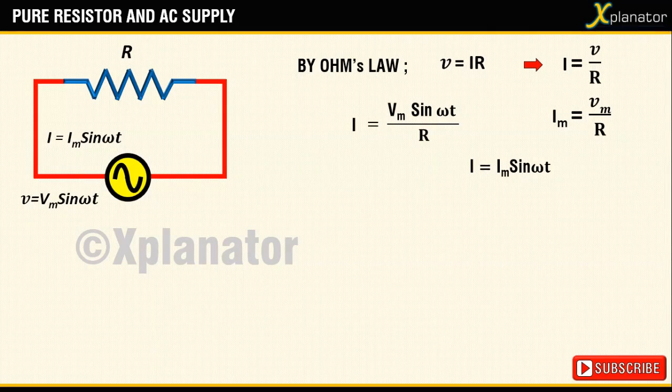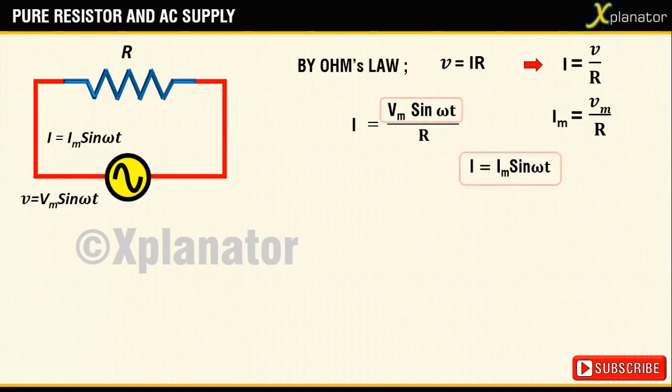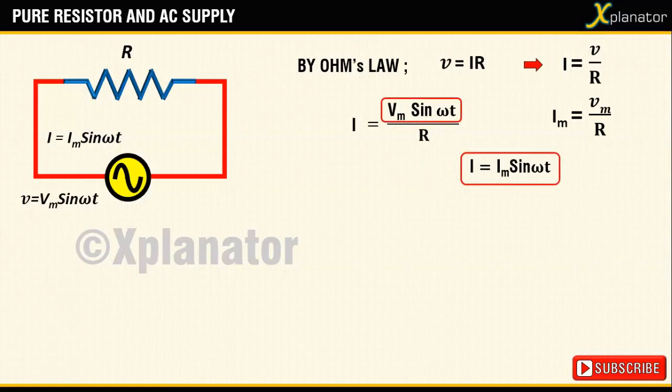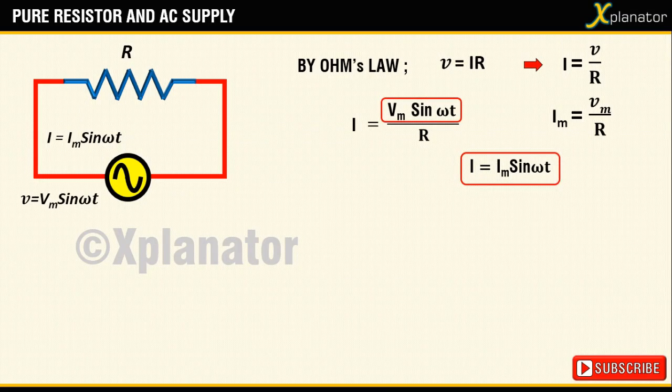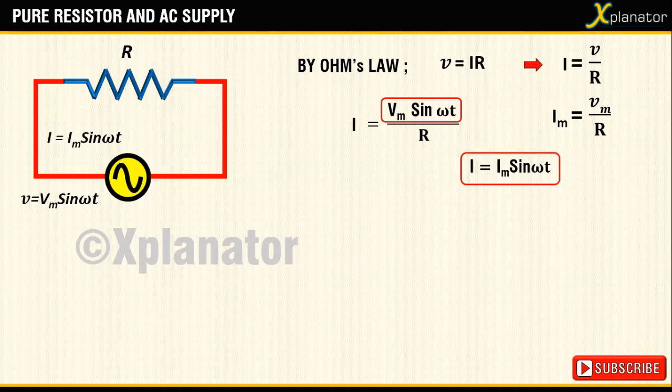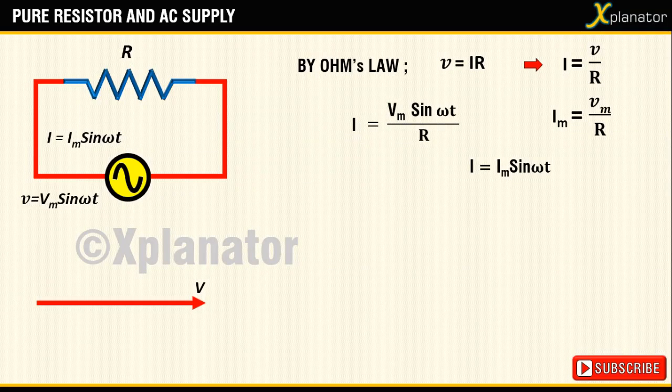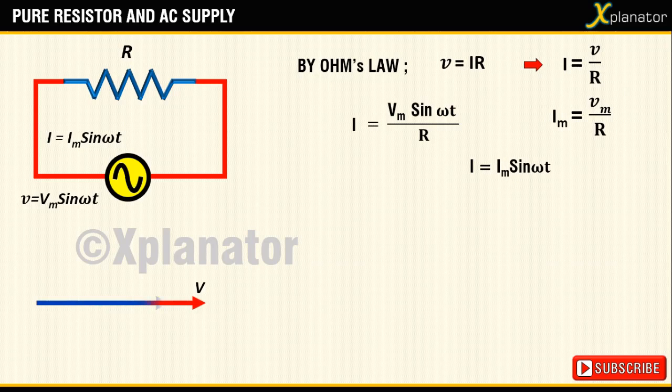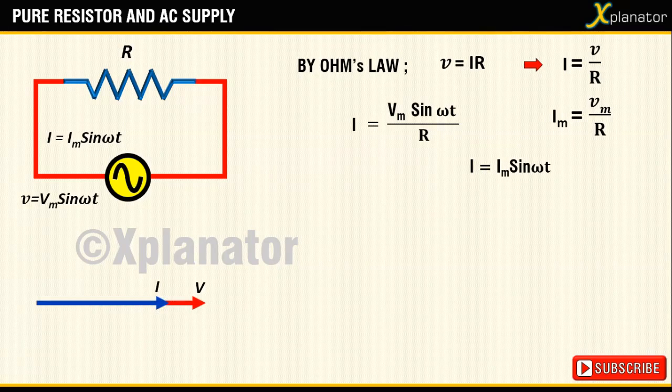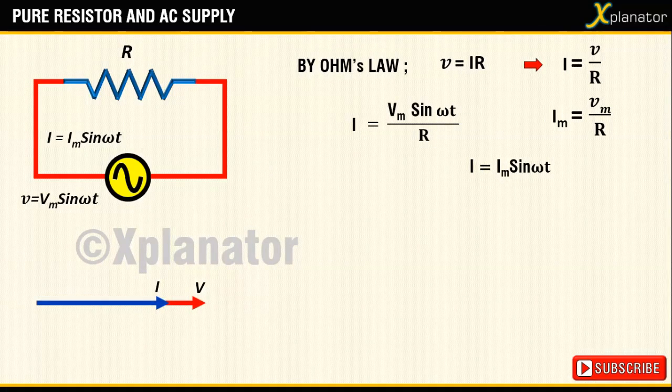Therefore, the equation for current will be i equals im sine of omega t. It can be seen from the equations that voltage and current are in phase for a pure resistor. To draw the phasor diagram, consider voltage as the reference, and since there is no phase difference between the current and voltage, current phasor will follow the same line as that of the voltage.